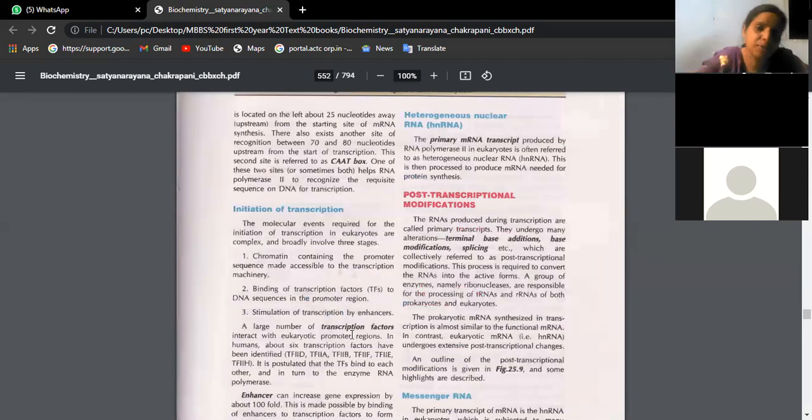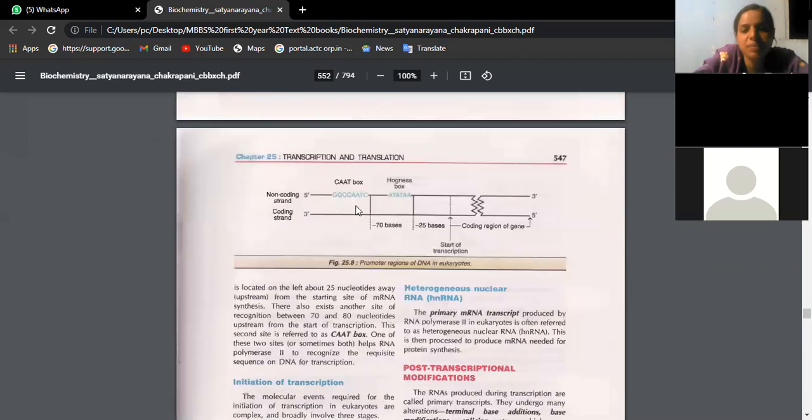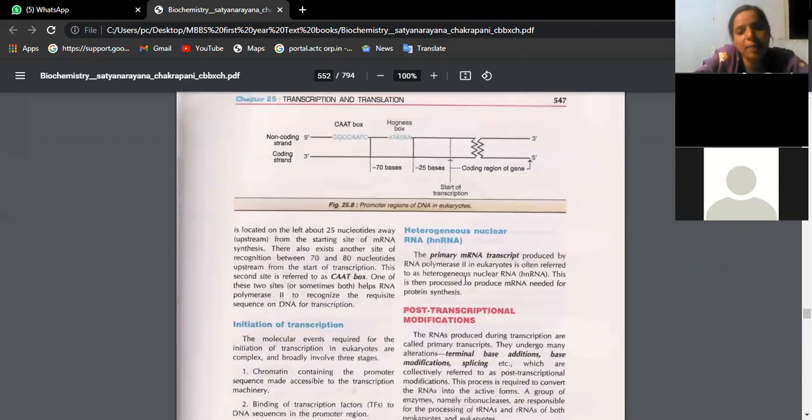So once you are supposed to draw this and read the theory part from this. Hogness box, TATA box, CAAT box. So initiation of transcription. So that means molecular C chromatin containing the promoter sequence, what I told you. Hogness box and TATA box, they are actually responsible for this like RNA polymerases to come and bind. So binding of transcription factors to DNA sequences in promoter region. Stimulation of transcription by certain enhancers. Enhancers will increase the visibility of TATA box and Hogness box. So the transcription factors are also there. We have six transcription factors. Which are transcription factors like you are finding this TFIID, A, B, F, E and H. These are the transcription factors and enhancers. They all will increase the visibility of these sequences. So that those RNA polymerases will go and bind.